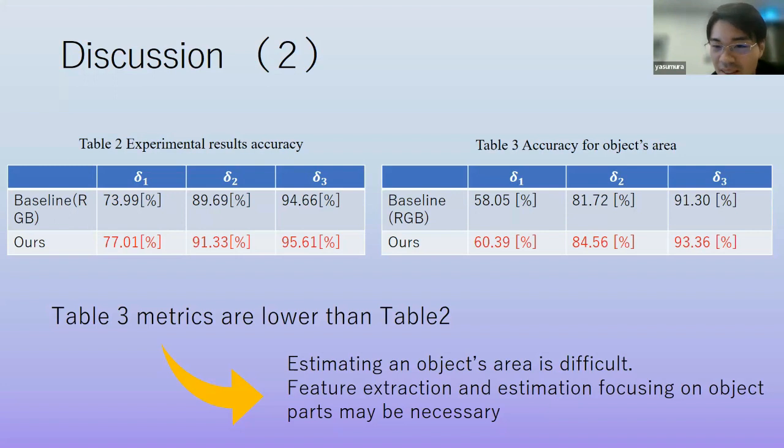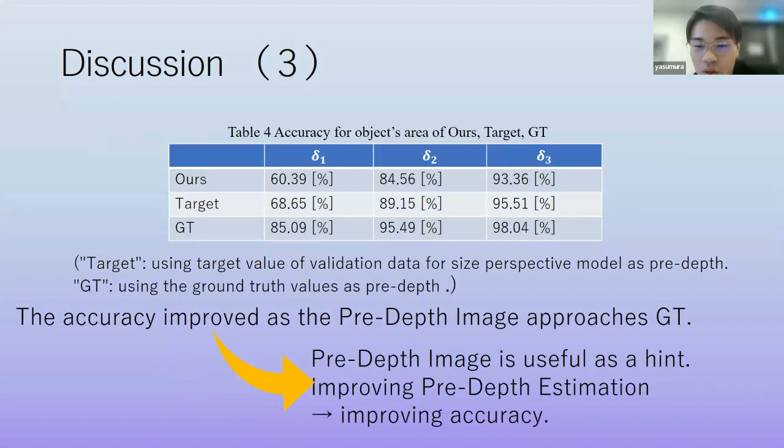Next, table 4 shows the result when the pre-depth image gradually brought closer to the true value. I mean, the row of target means we use the target value of validation data for size perspective model as pre-depth. Row of ground truth means we use the ground truth value as pre-depth. From the table, the accuracy is improved as pre-depth image approaching ground truth value. So this result suggests that pre-depth image is useful as a hint for estimation and improving pre-depth estimation means improving accuracy of generated images.